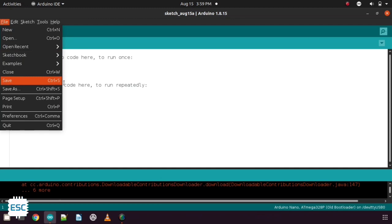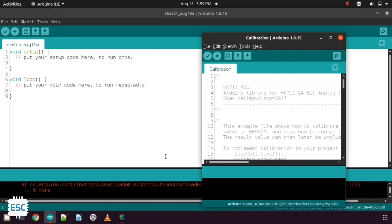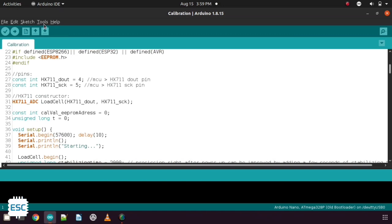Now go to file, example, HX711 ADC. Open the calibration code. So this is the calibration code. Now select board and port and upload the code.